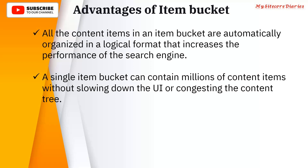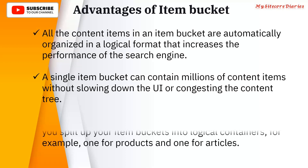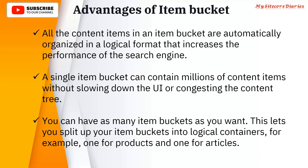As per Sitecore best practice, you can have a maximum of one hundred items within one node, otherwise it will start giving a performance issue. But with item buckets, you can store millions of items inside a single bucket, and they are automatically arranged in a logical format with no congestion in the content tree. You can also have as many item buckets as you want, splitting them into logical containers — for example, one for products and one for articles.